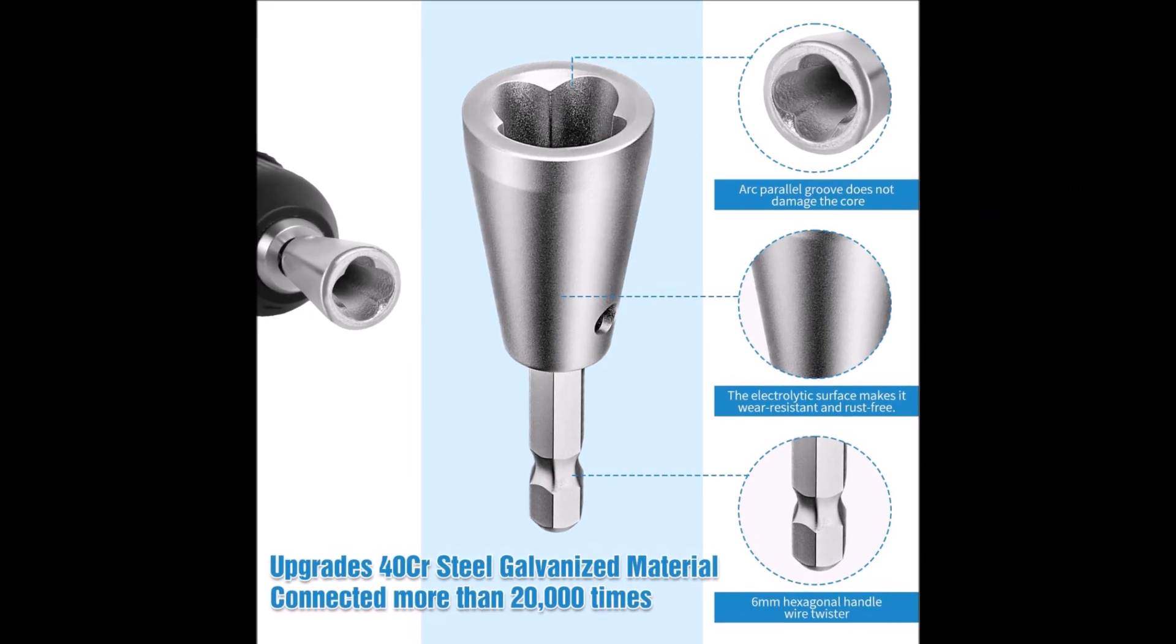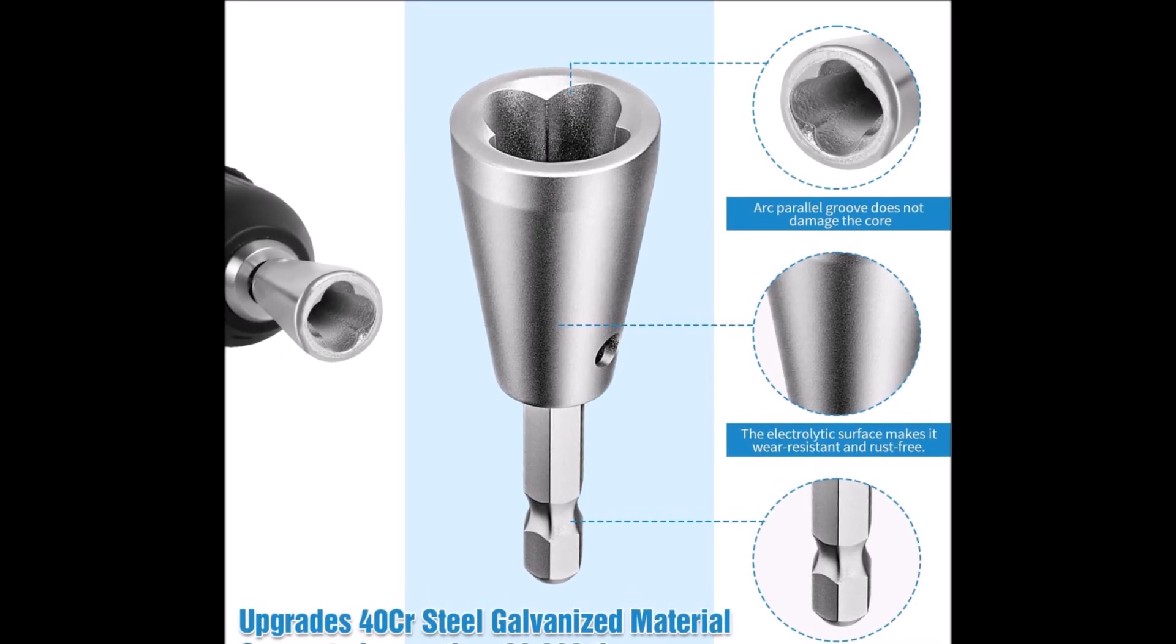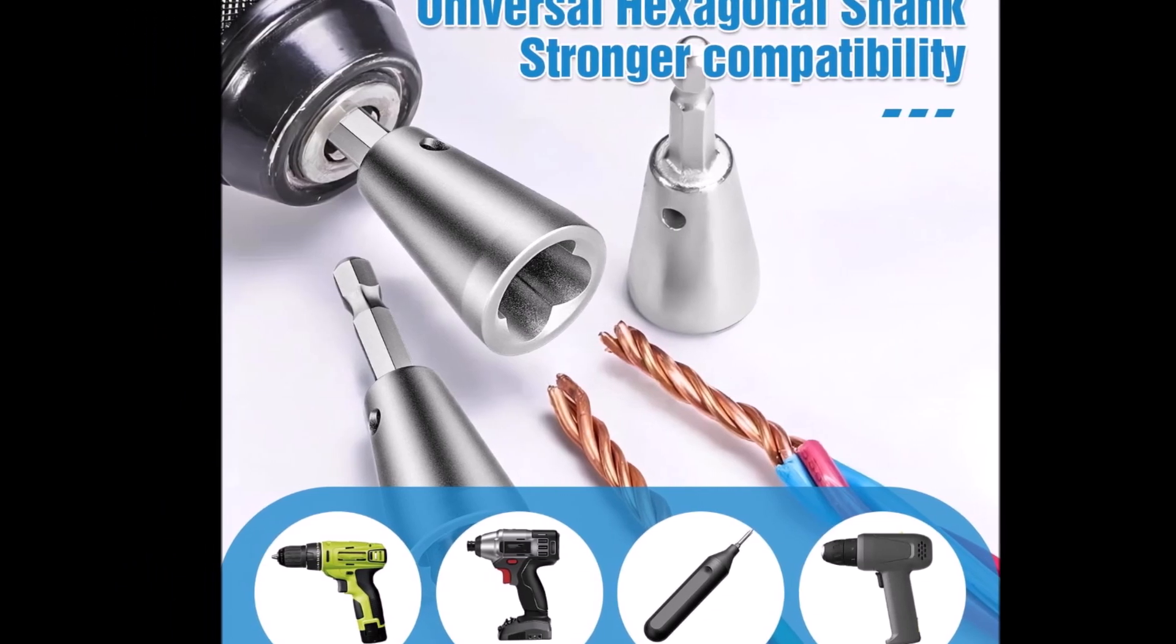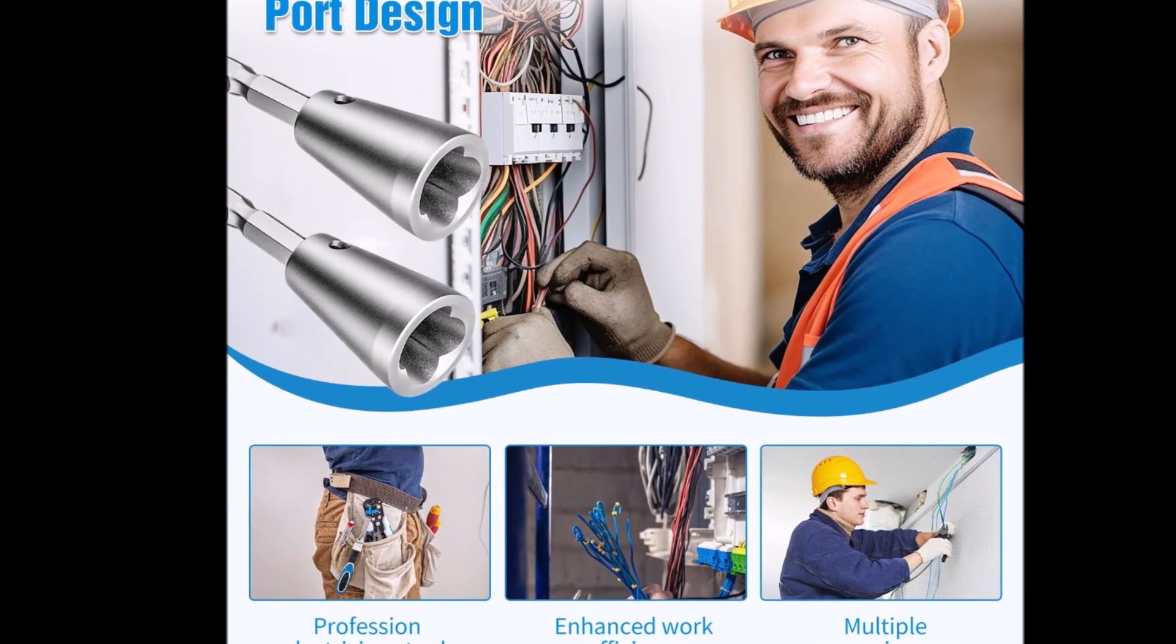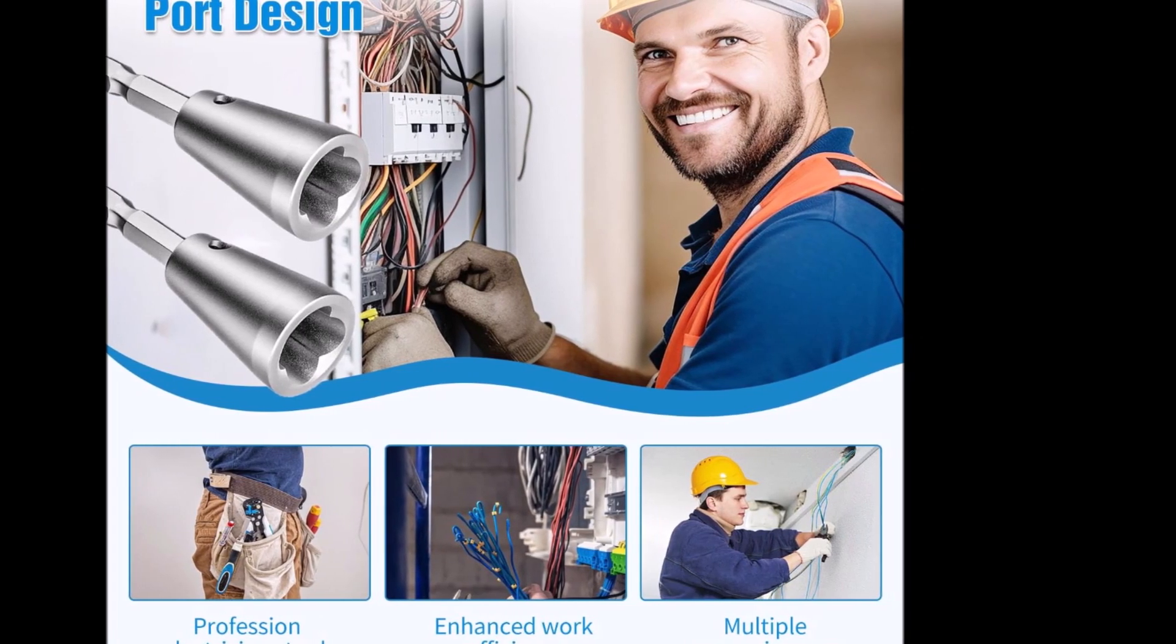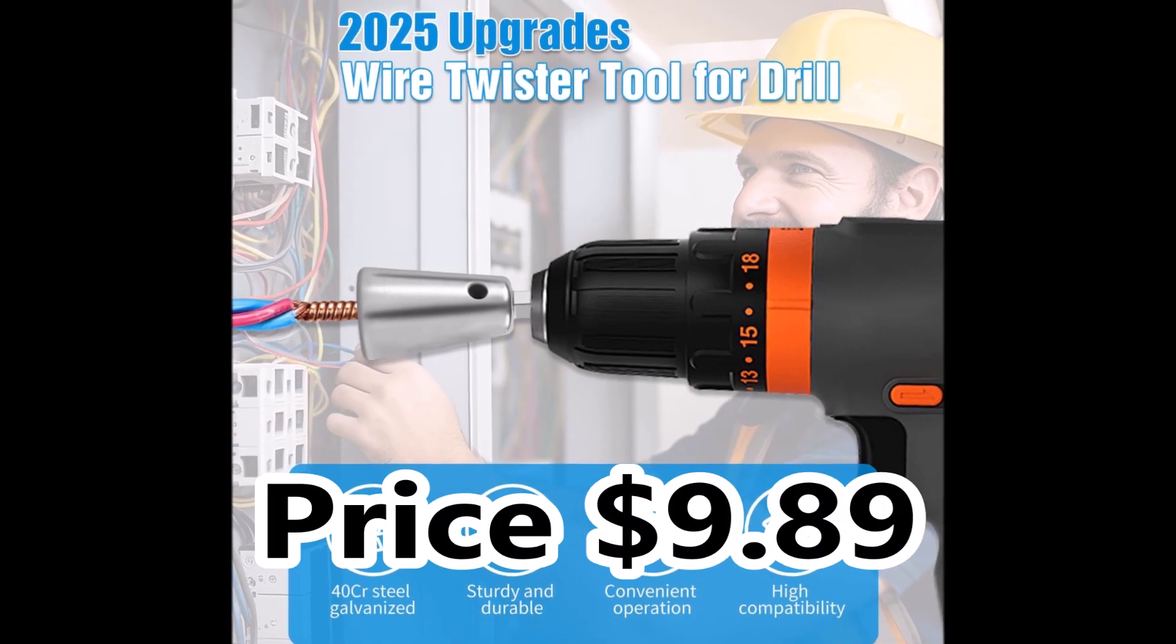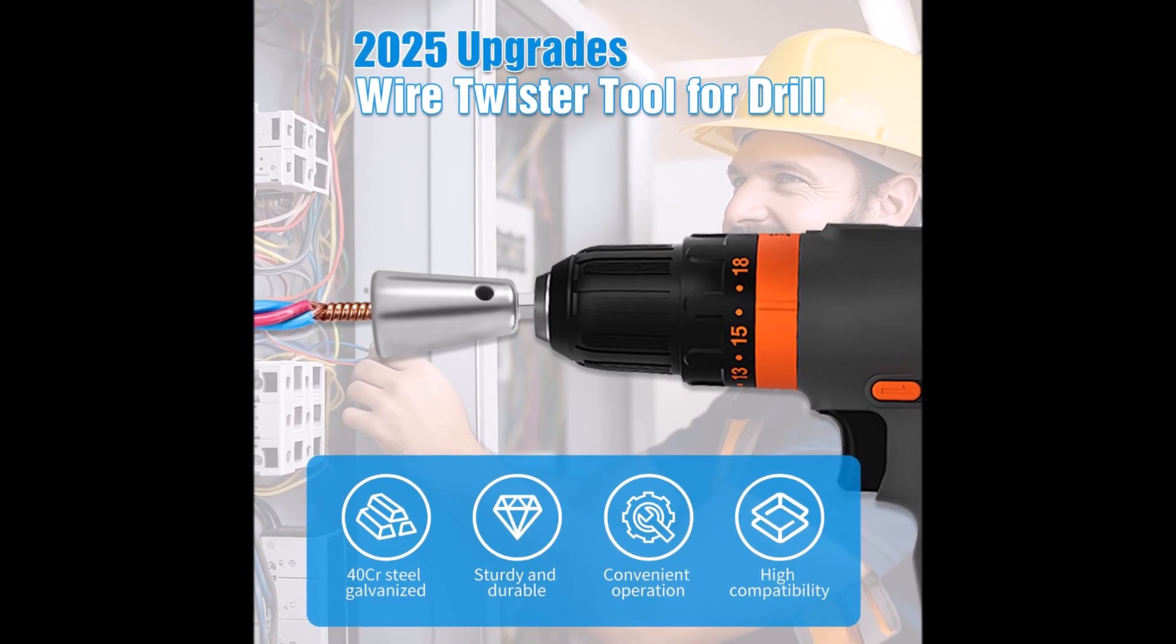The observation port is a thoughtful feature, making it easy to confirm wire placement before twisting, which adds a layer of safety and precision. It handles both soft and hard wires well, making it suitable for a range of electrical jobs. The ergonomic design helps reduce hand fatigue, especially during repetitive tasks like junction box wiring. For electricians or DIYers looking to streamline wire prep and avoid finger cramps, this tool delivers reliable performance and saves time on the job.